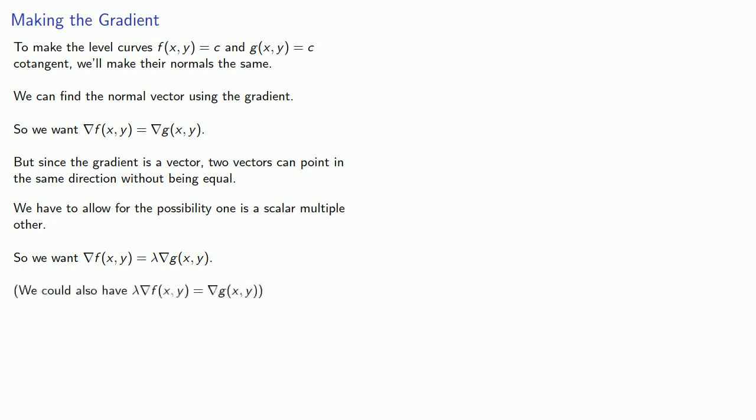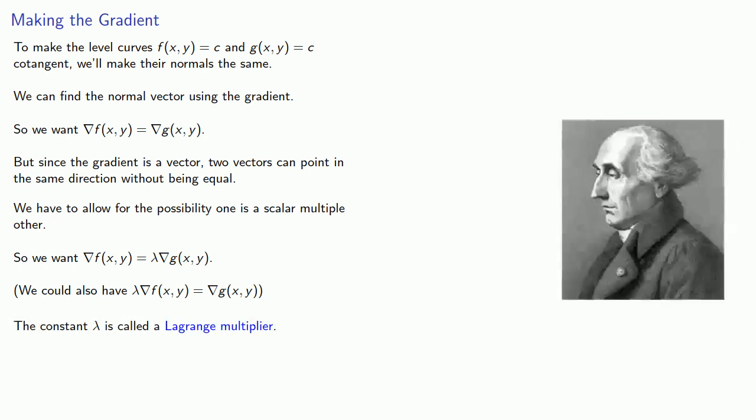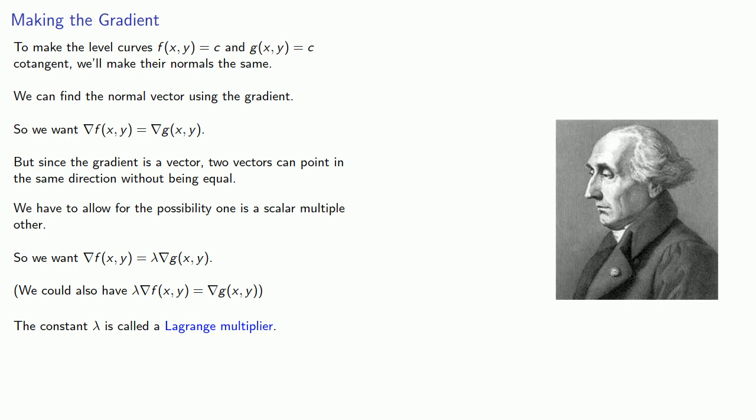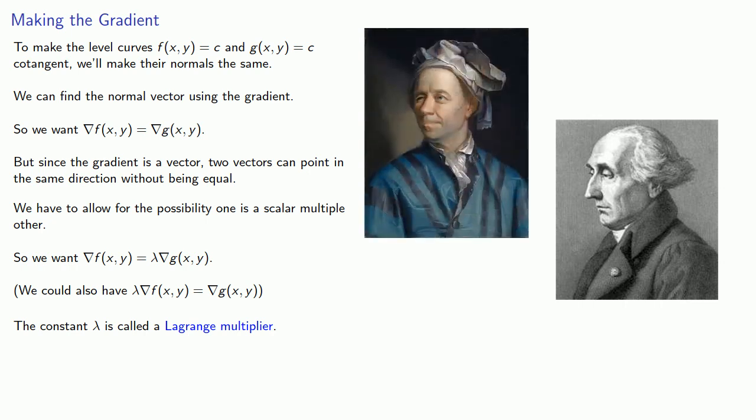We could also have lambda gradient of f equals gradient of g. The constant lambda is called a Lagrange multiplier, named after an 18th century mathematician who would probably have been the most important mathematician of the 18th century if he didn't have an older contemporary in Euler and a younger contemporary in Laplace.